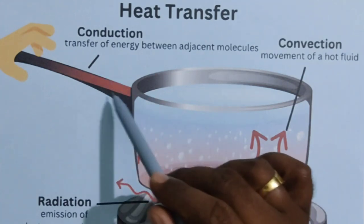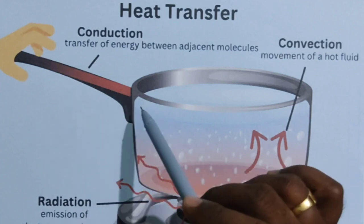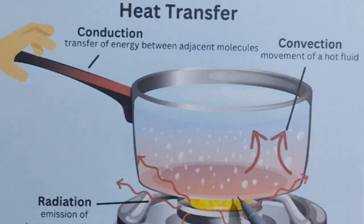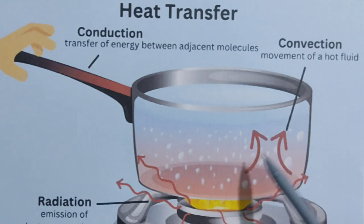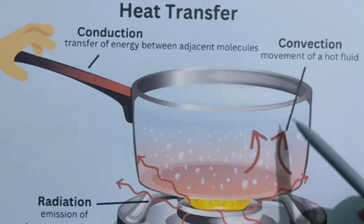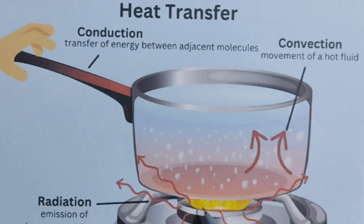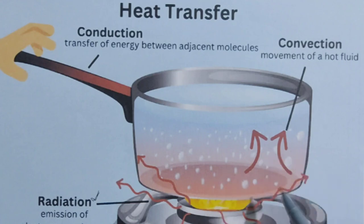Consider a vessel with fire beneath it: conduction heat transfer occurs through the solid vessel walls, convective heat transfer occurs from the vessel to the water inside, and heat energy from the fire is radiated to the surroundings by means of radiation. All three modes of heat transfer are present in one setup.